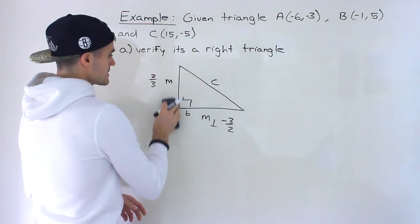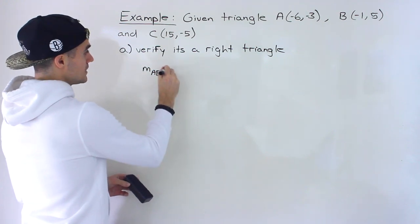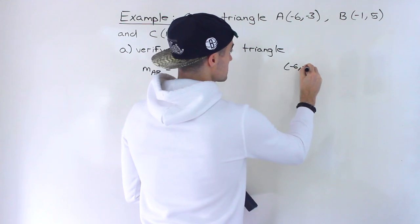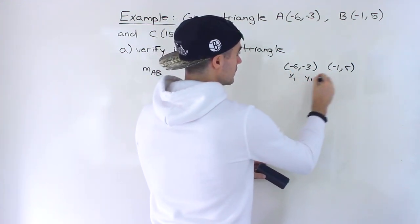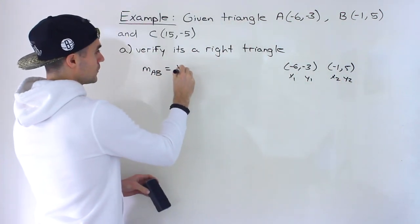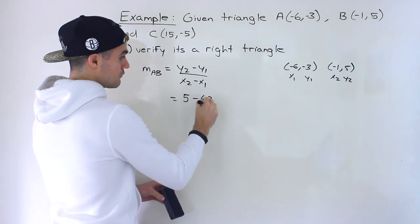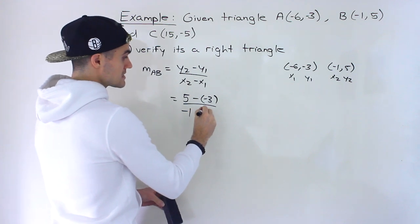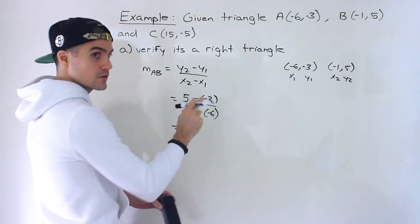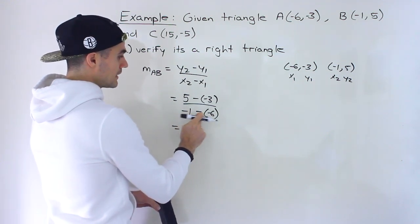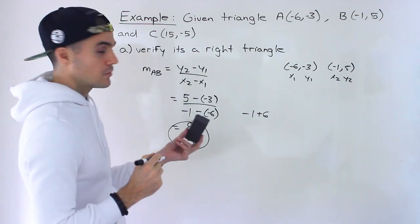Let's find the slopes. Starting with the slope of AB — label A as x1, y1 and B as x2, y2. The slope formula is y2 minus y1 over x2 minus x1. So we have 5 minus negative 3 over negative 1 minus negative 6. That gives us 5 plus 3 equals 8 in the numerator, and negative 1 plus 6 equals 5 in the denominator. So the slope of AB is 8 over 5.